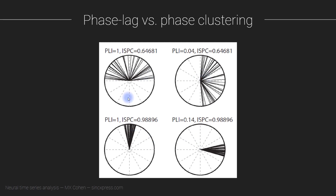However, the PLI is quite different between these two cases. Here it is one, because all of these phase angles are pointed up — they have the same sign of their projection onto the imaginary axis. So the phase lag index is 1 here, and it's 0 here, because half of the phase angles are pointed up and half are pointed down on the imaginary axis.